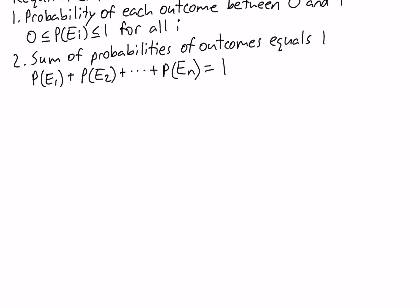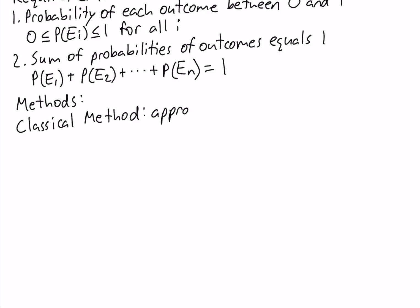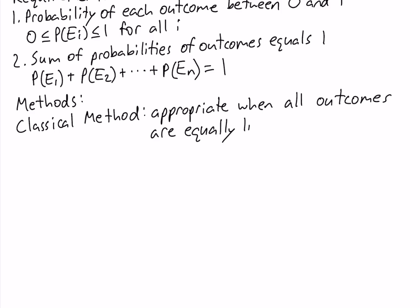There are three methods for assigning probabilities. The first method is called the classical method. The classical method is appropriate when all the outcomes are equally likely.